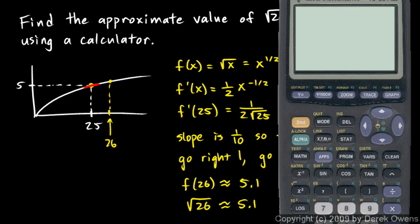Let's check this on the calculator: the square root of 26 is 5.099, so we're pretty close.